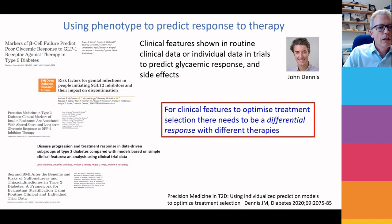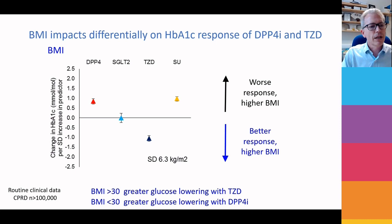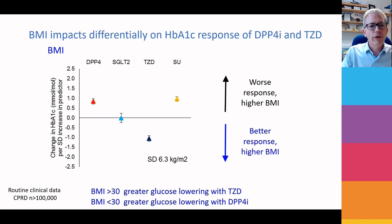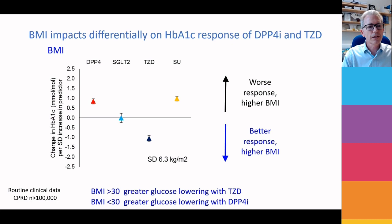This is work that John did in CPRD, the primary care dataset from across the UK. We're looking at change in HbA1c, where below the line means people respond better. What we're looking at is BMI — if you have a higher BMI, you respond better to drugs below the line and worse to drugs above it. Looking at four different drugs, DPP4s and SUs respond differently to TZDs in relation to BMI. If your BMI is over 30, you have greater glucose lowering with TZDs; if your BMI is under 30, you have greater glucose lowering with DPP4s.